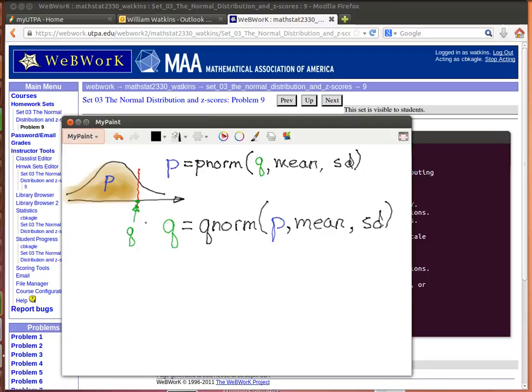On the other hand, if we needed to find the Q but we knew what the P was, the area below the Q, then we could find Q by using the quantile, that's what Q stands for, the quantile norm, the QNORM. All it would need to do is tell R what the P is, what the area below Q is and tell it what the mean and the standard deviation is.